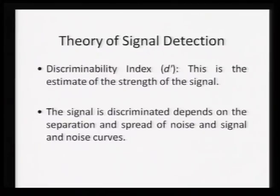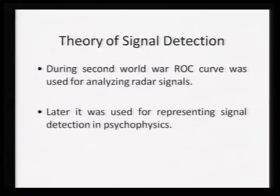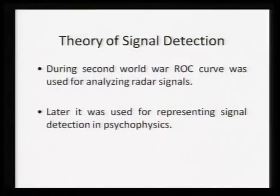The theory of signal detection talks about the discriminability index, called D prime. D prime is the estimate of the strength of the signal — the signal is discriminated depending on the separation and spread of noise and the signal-and-noise curves. This theory entered our understanding of perceptual processes during the Second World War, when the ROC curve was used to analyze radar signals. Technology was not so advanced in those days, so special attempts were made so that when warplanes of the enemy entered your territory, radars could detect them. This ROC curve was later included in psychology, where it was used for representing signal detection in psychophysics.